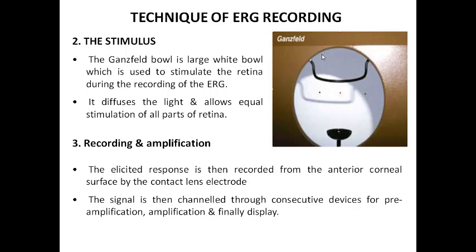The second requirement of ERG is the Ganzfeld bowl stimulator. The Ganzfeld bowl is a large white bowl used to stimulate the retina during recording of ERG. It diffuses the light and allows equal stimulation of all parts of the retina. Regarding recording and amplification, the elicited response is recorded from the anterior corneal surface by the contact lens electrode or any other type of electrode. The signal is then channeled through consecutive devices for pre-amplification, amplification, and finally display.